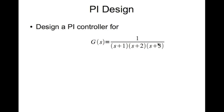We are given this plant, G of s, 1 divided by s plus 1 times s plus 2 times s plus 3. We are supposed to design a PI controller here.